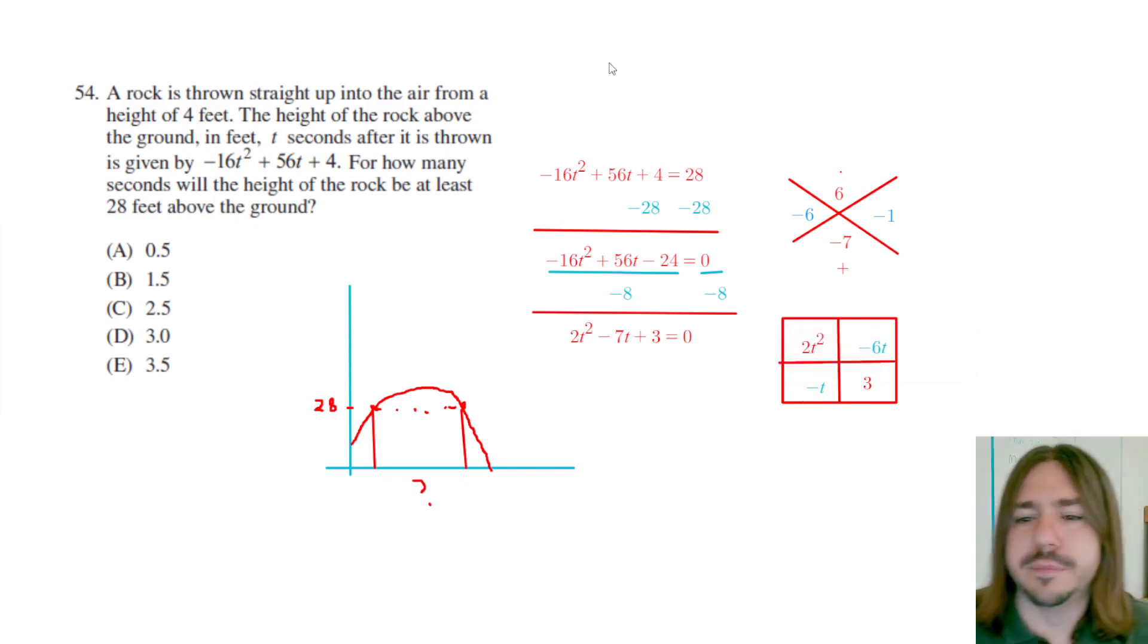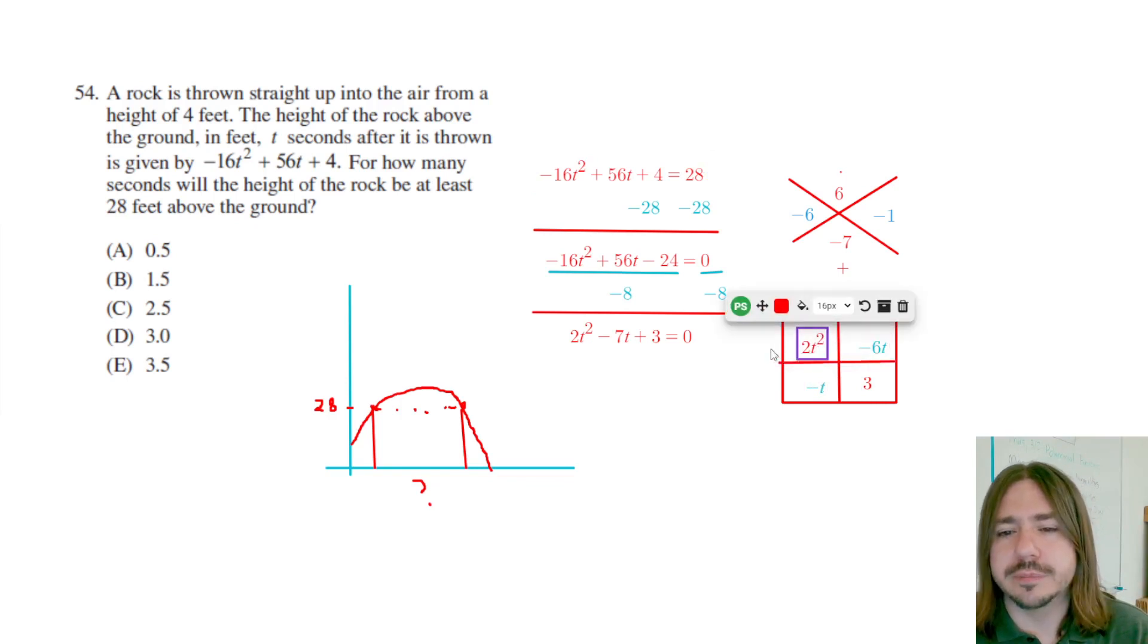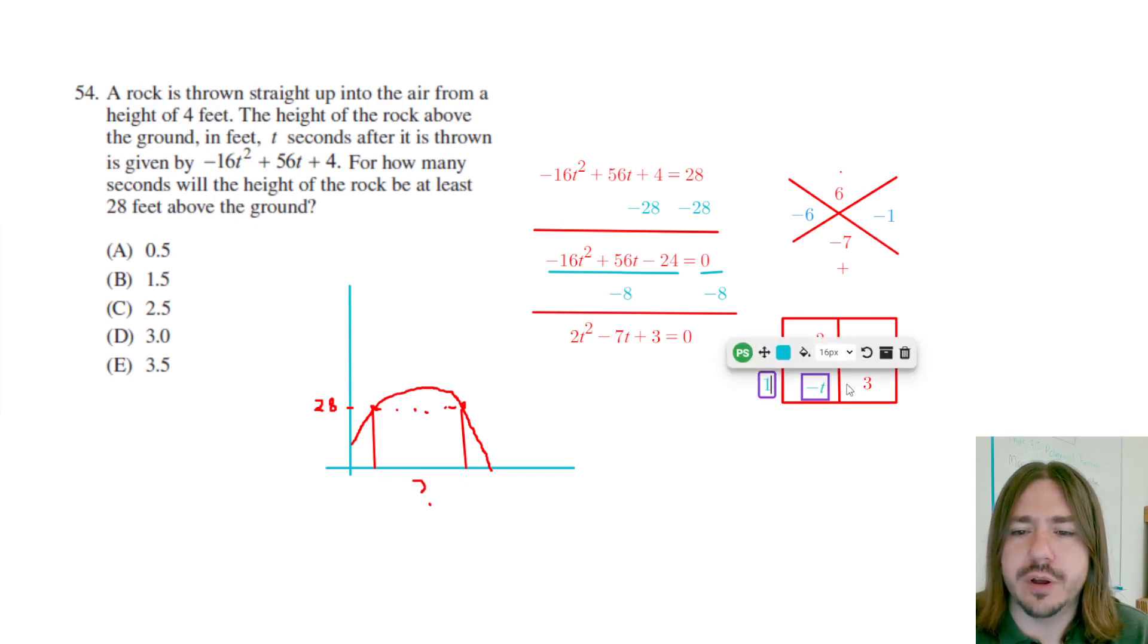Okay. So to come up with the factors, what I need to do next is find the greatest common factor of each row in each column. So the GCF or the greatest common factor of this first row would be 2t. 2t squared is divisible by 2t and so is negative 6t. The GCF of this second column is going to be one. Potentially we could factor out a negative one. We'll see if we need to at the end. The GCF of this first column is going to be t and the GCF of the second column is going to be three.